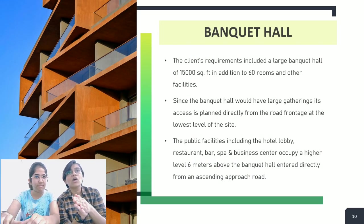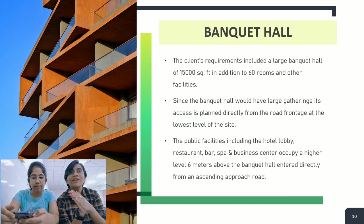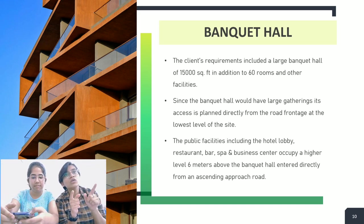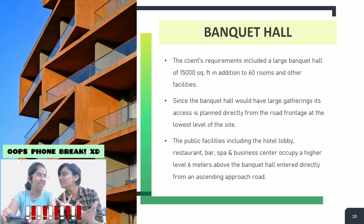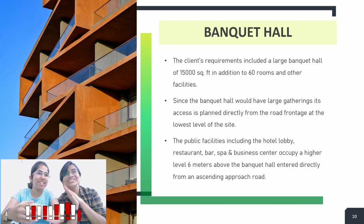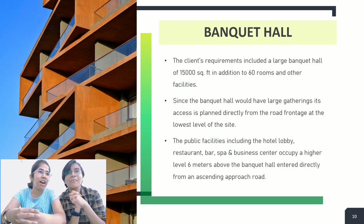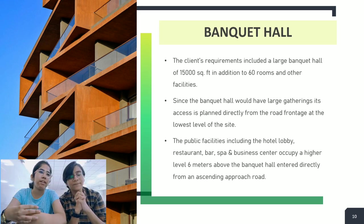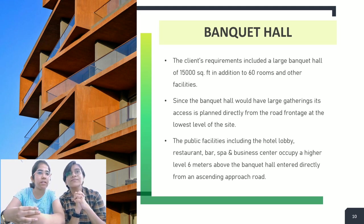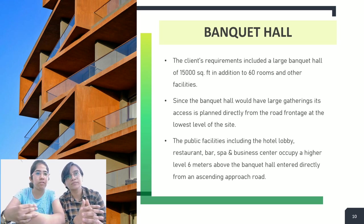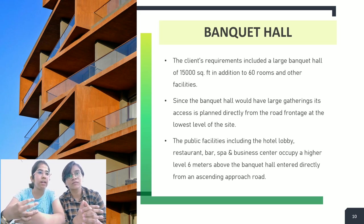Now comes the banquet hall. The client's requirement included a large banquet hall of 15,000 square feet in addition to 60 rooms and other facilities. Since the banquet hall has large gatherings, its access is planned directly from the road front at the lowest level of the site. The other public facilities — including the hotel lobby, restaurant, bar, spa and business centre — occupy a higher level, 6 meters above the banquet hall, and are entered through a separate approach road.